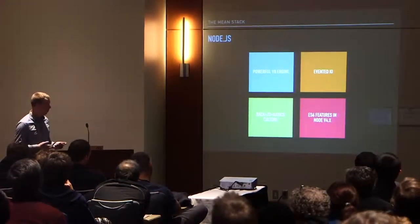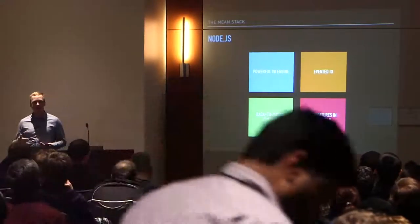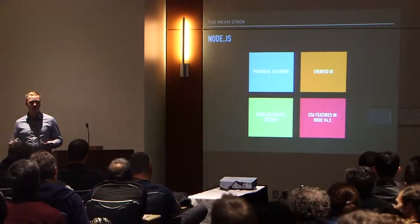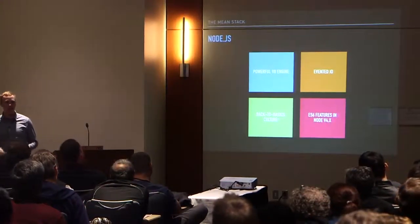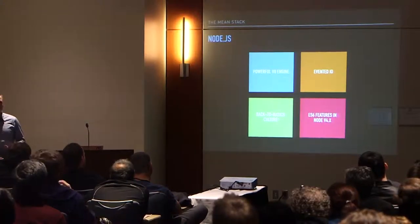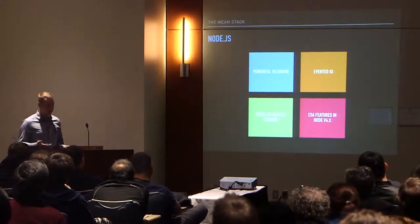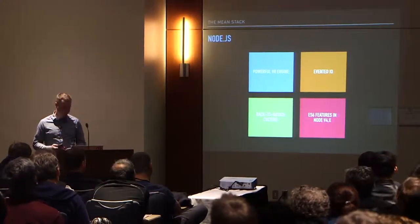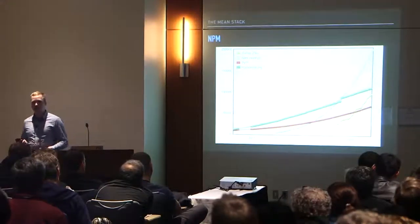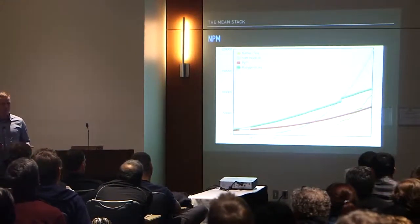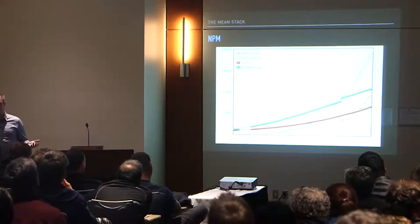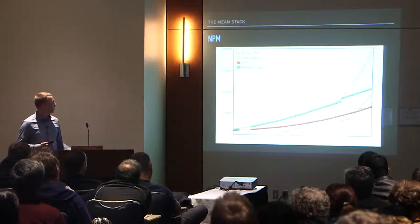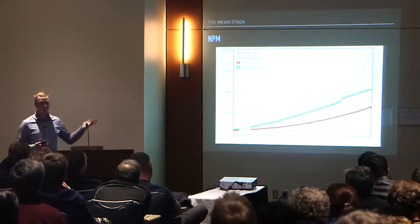And in Node 4, which just came out a couple weeks ago, we get a lot of the ES6 features, which really turned JavaScript from being the bad part of Node to being a pretty good language that's a treat to work with. This includes things like string interpolation, generators, promises, and a lot of stuff that is really what you want to see in a modern language. But more important than that, especially in the context of this conference, is the huge amount of open source packages available. This is just a graph of packages available over time.